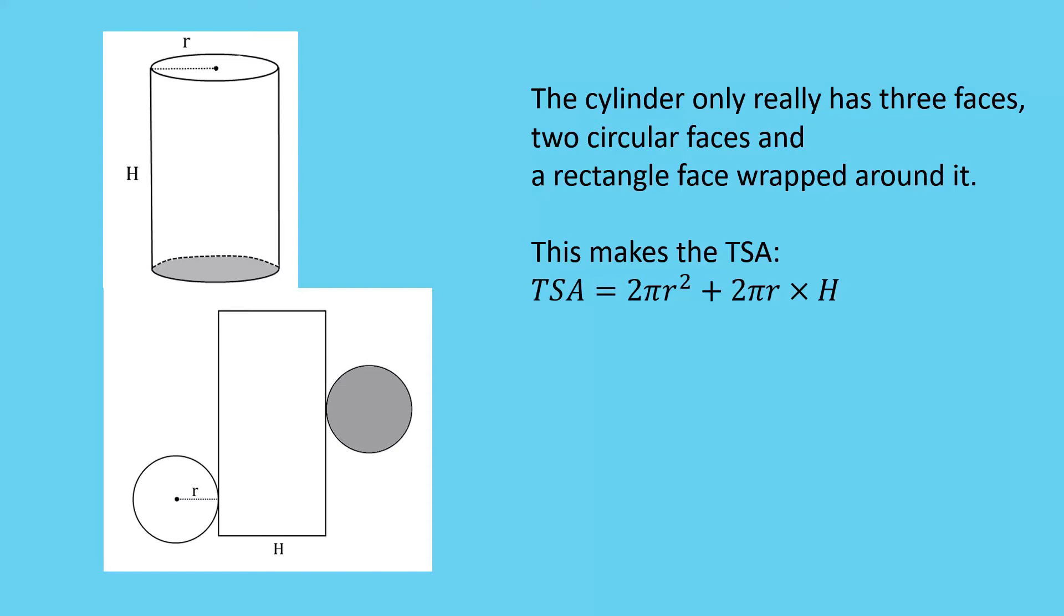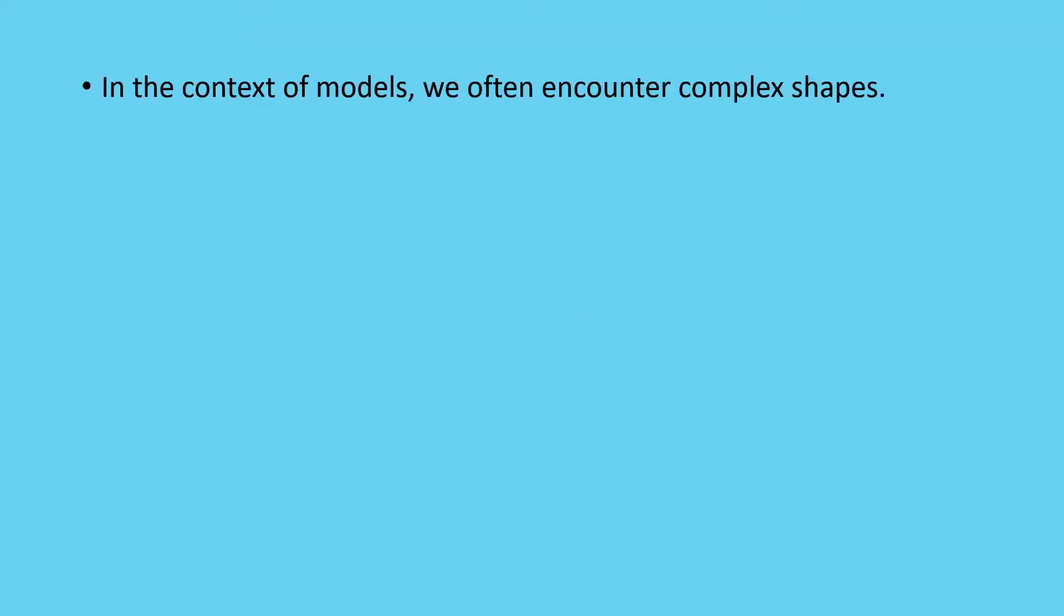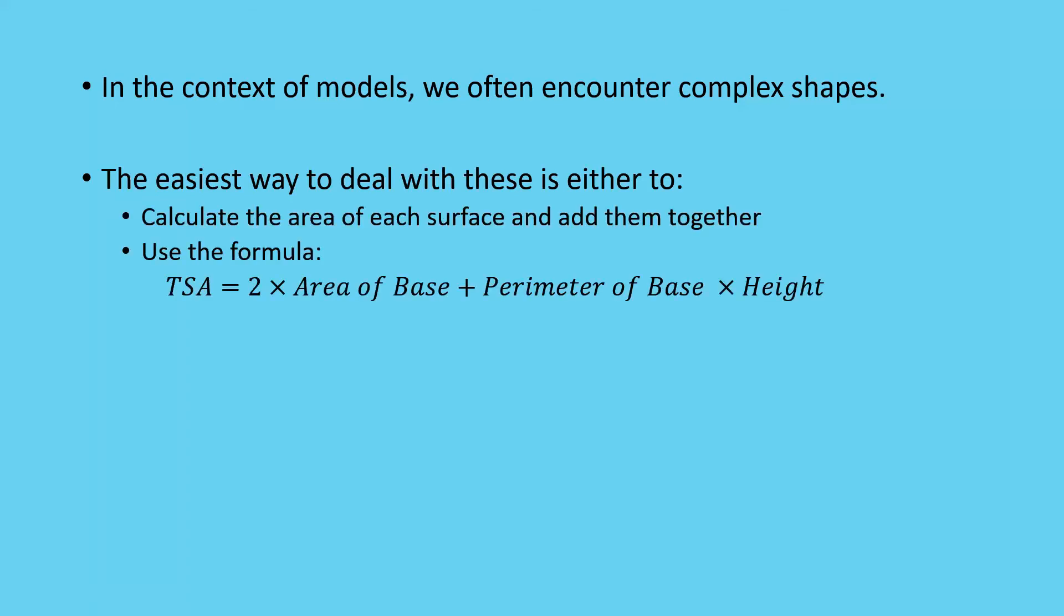a cylinder or a rectangular prism or something. If you're looking at some packaging questions, yes, it would be those simple shapes, but often we look at other ways to deal with it if they're complex shapes. The easiest way to do this is either you calculate the area of each surface and add them together, or you use a general formula: total surface area is two times the area of base plus the perimeter of the base times the height. We'll look at applying that second one in some other examples later in other videos, but you